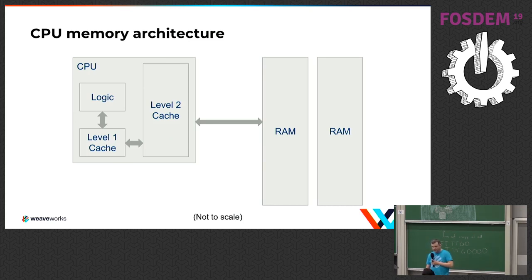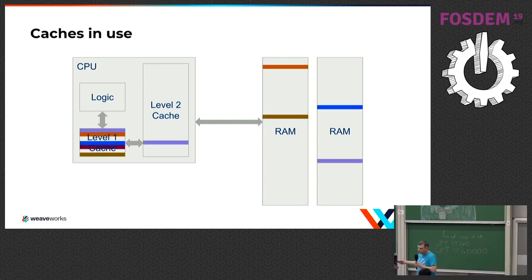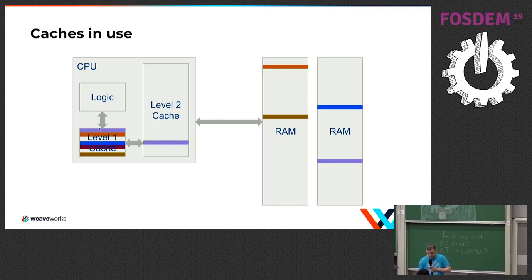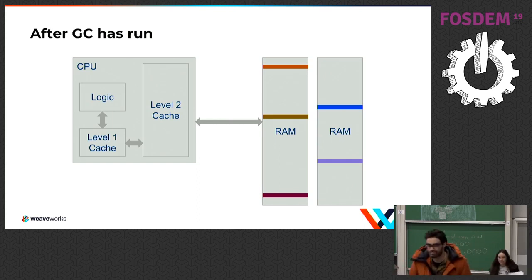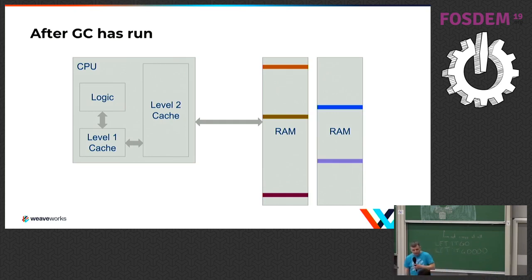Every time you garbage collect, it runs all the way through memory in your process. You have stuff in cache, and after the garbage collector runs it's kind of run through the whole memory space looking at stuff, basically emptying your cache. It slows down your program in ways you might not expect. Garbage collection slows you down more than just the time it spends garbage collecting, because it interferes with the cache behavior of the machine.